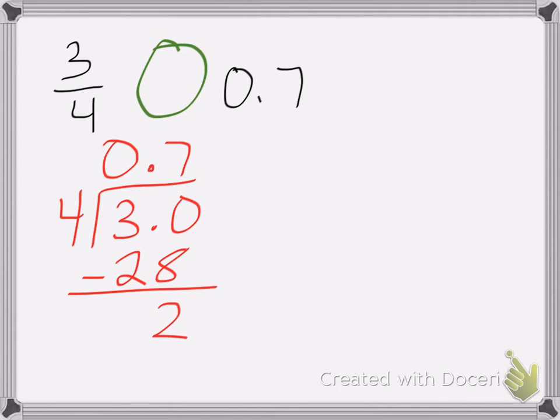Subtract it, get 2 left over, add another 0 and bring it down. 4 goes into 20, 5 times, which is 20, and we zero out. So 3 fourths is the same as 0.75.